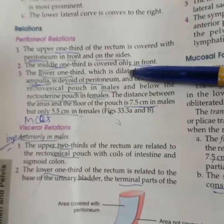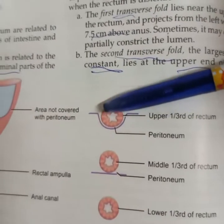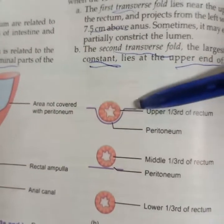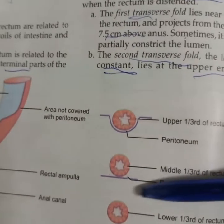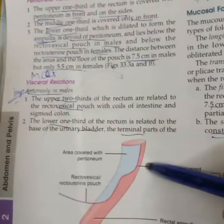Regarding the peritoneal relations of the rectum: in the upper part, it is covered anteriorly and on the sides by peritoneum. In the middle part, it is covered only anteriorly. In the lower part, it is devoid of peritoneum.